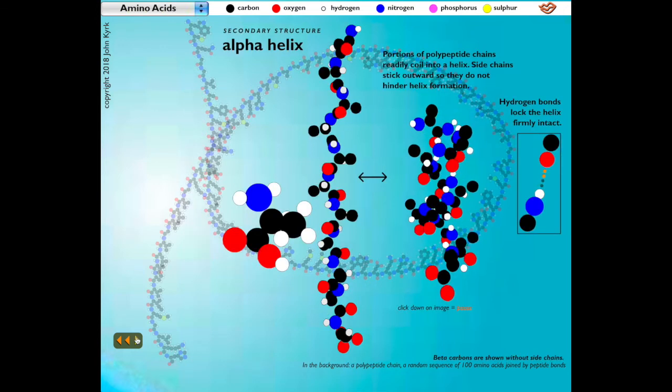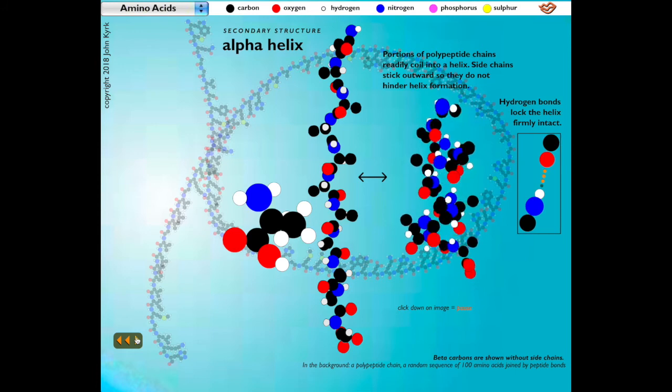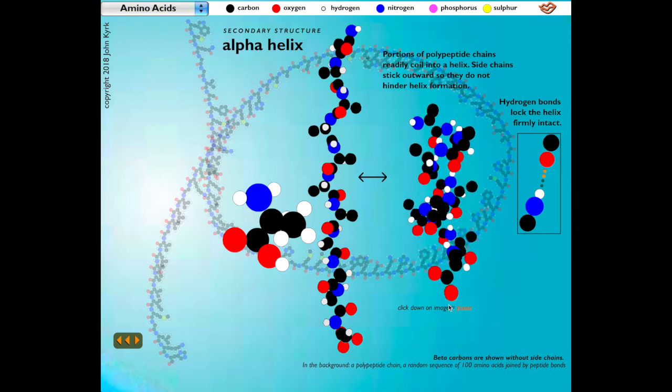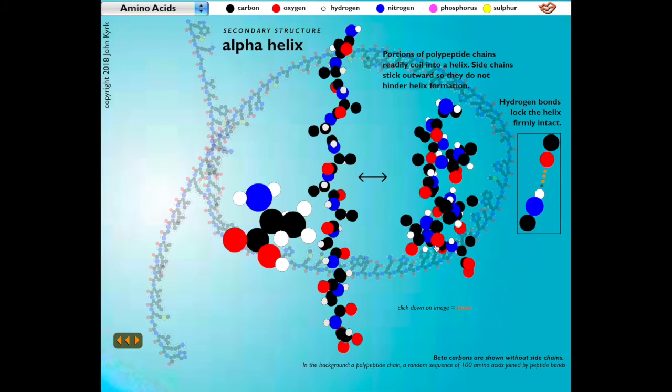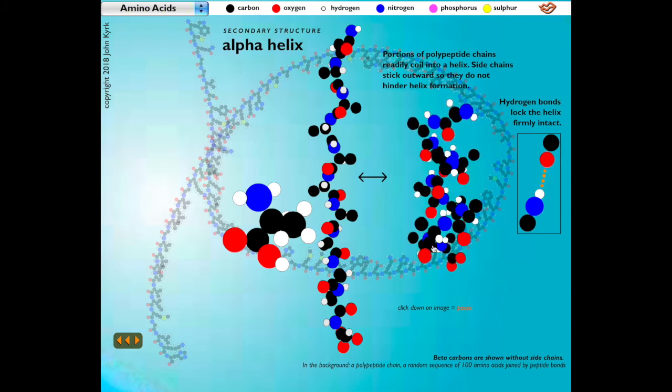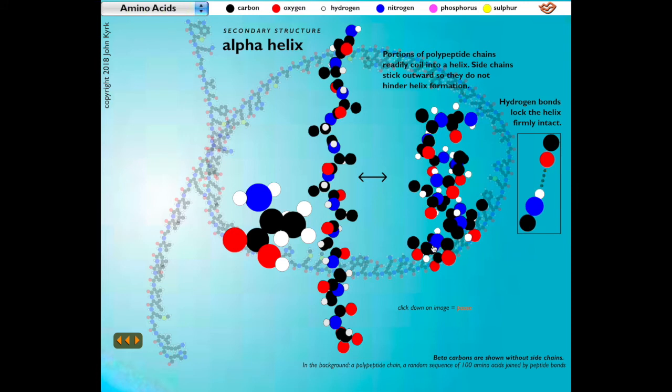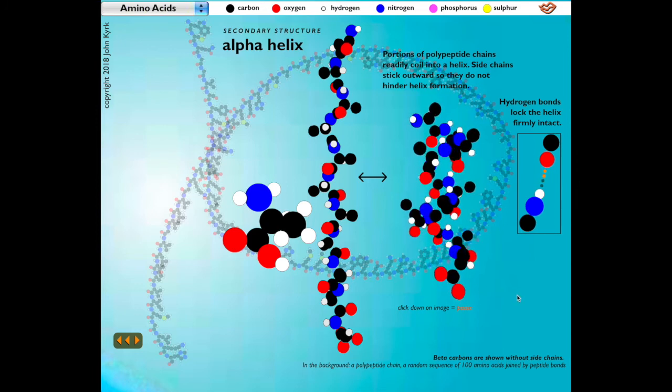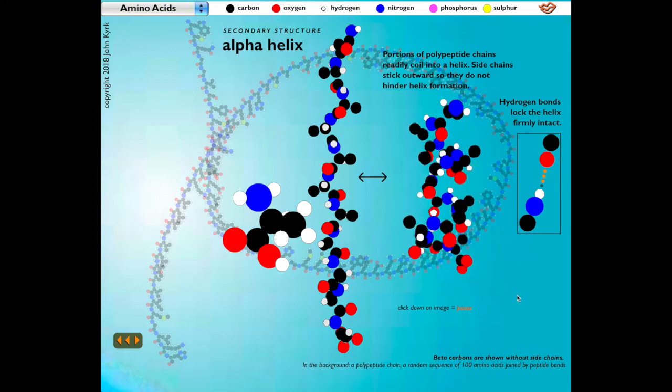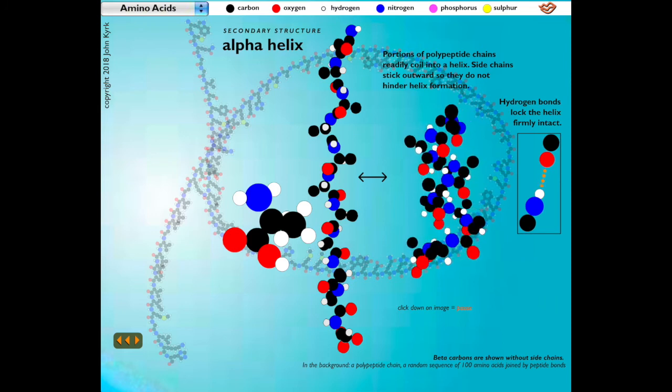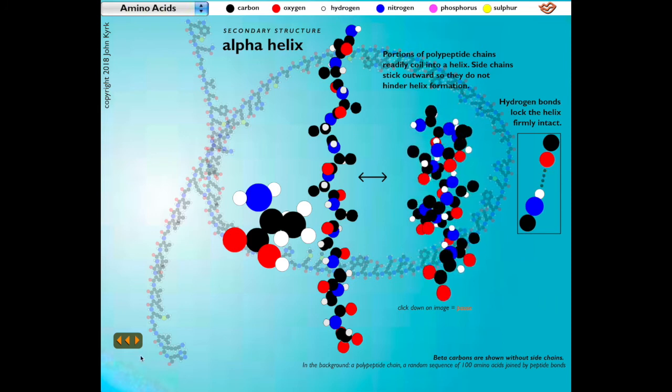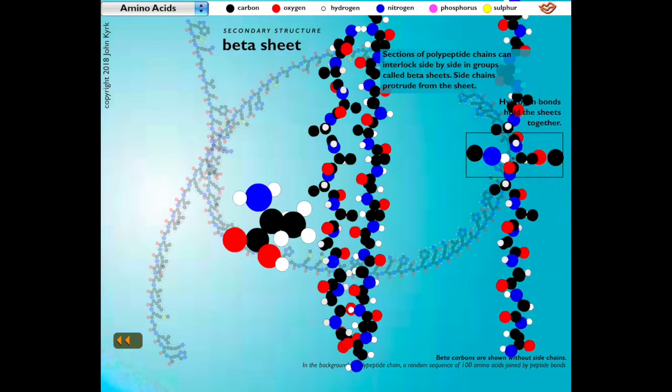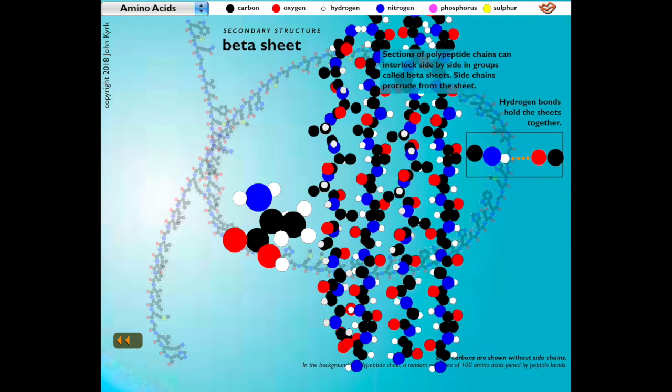Once the primary structure forms, differences in amino acids allow the formation of a secondary type of structure. Portions of the polypeptide chains readily coil into a helix drawn together by localized concentrations of charge. Side chains stick outward so they do not hinder helix formation. The helix is held in position by hydrogen bonds. The nitrogen atom attracts hydrogen's lone electron and holds it in a tight bond, leaving the hydrogen's proton exposed as a location of positive charge, which can then attract locations of negative charges on other amino acids, such as the oxygen shown here.